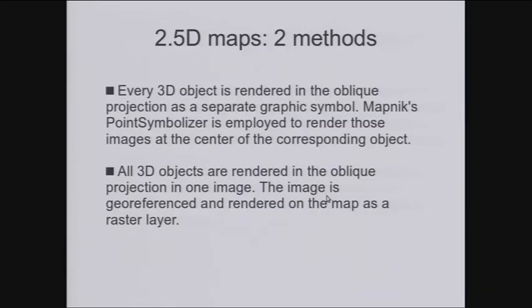And now to 2 and a half D maps rendering. I propose two approaches. The first one, every 3D object is rendered into oblique projection as a separate graphic symbol. Then I employ MapNik point symbolizer to render those images at the center of the corresponding object. And the second approach, all 3D objects are rendered in oblique projection in one image. And the image is georeferenced and rendered on the map as a raster layer.